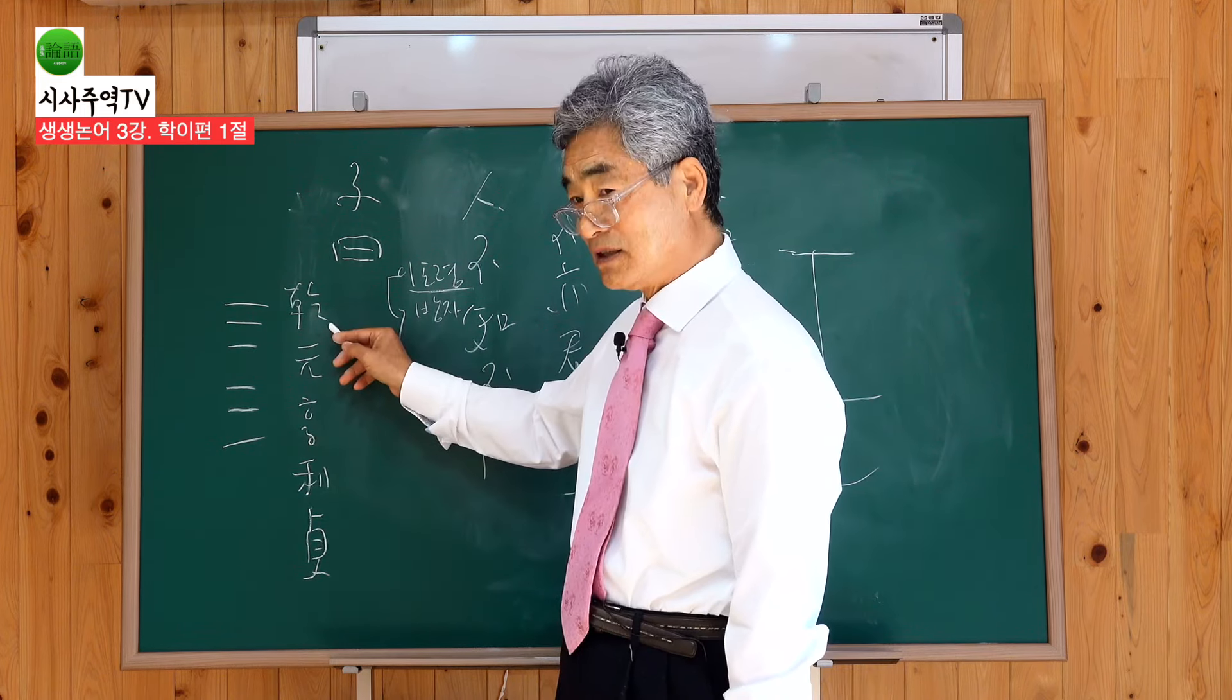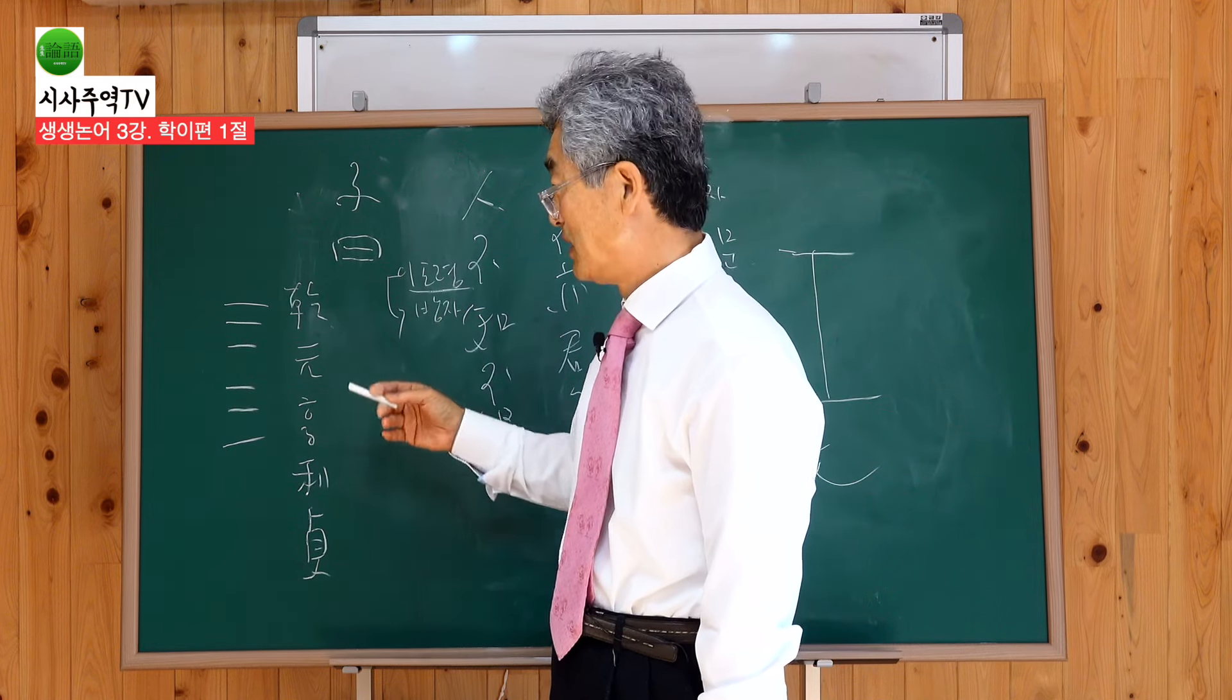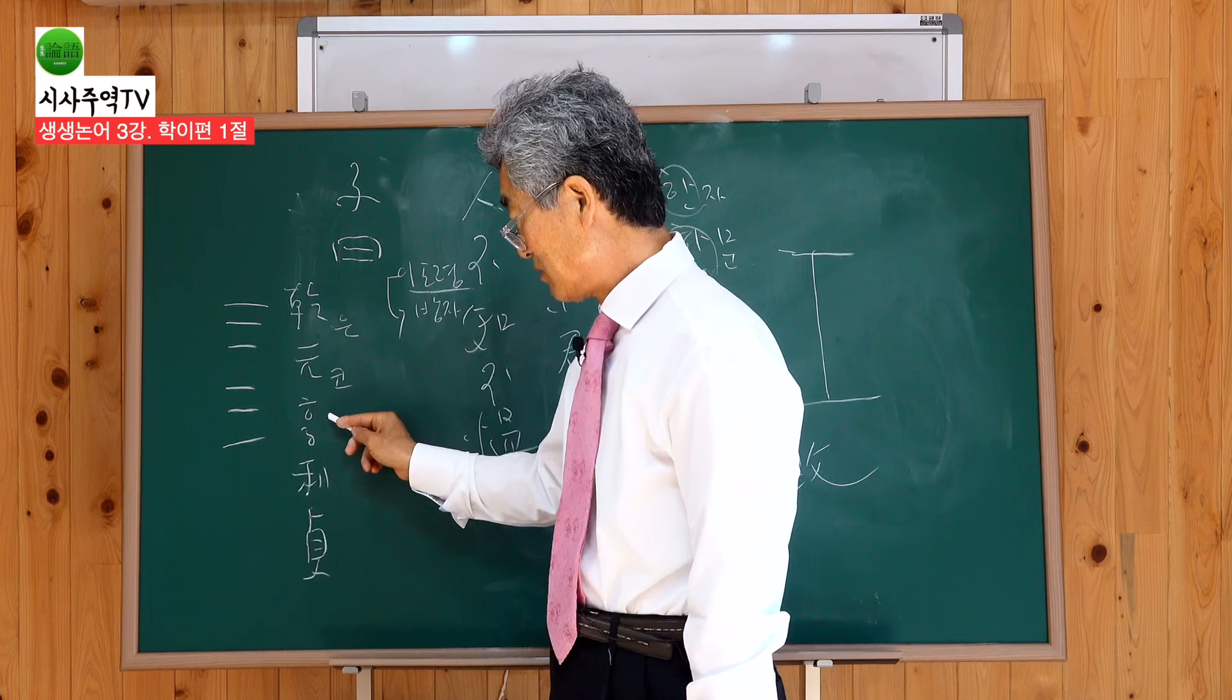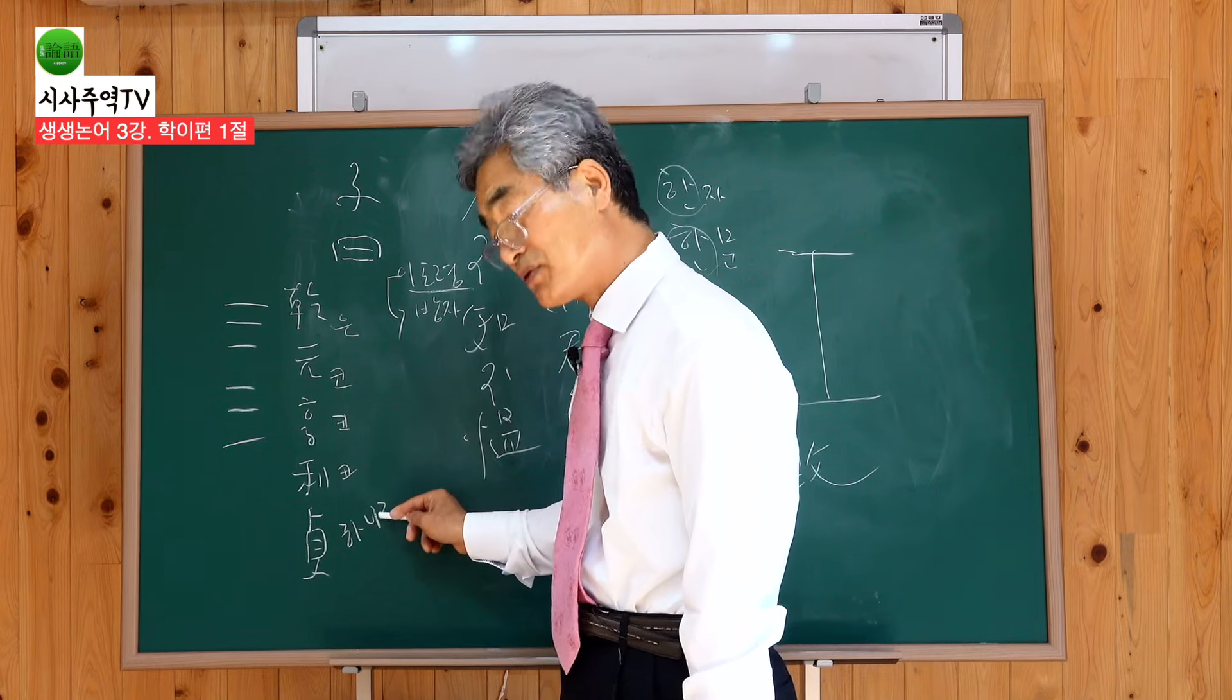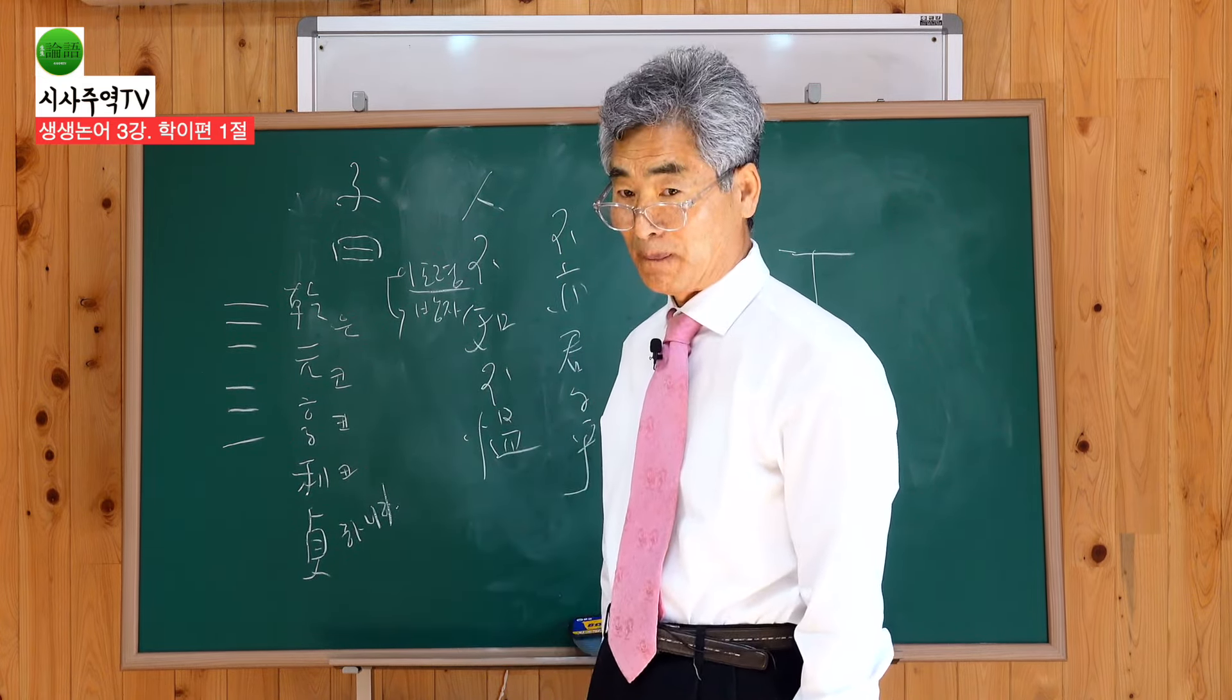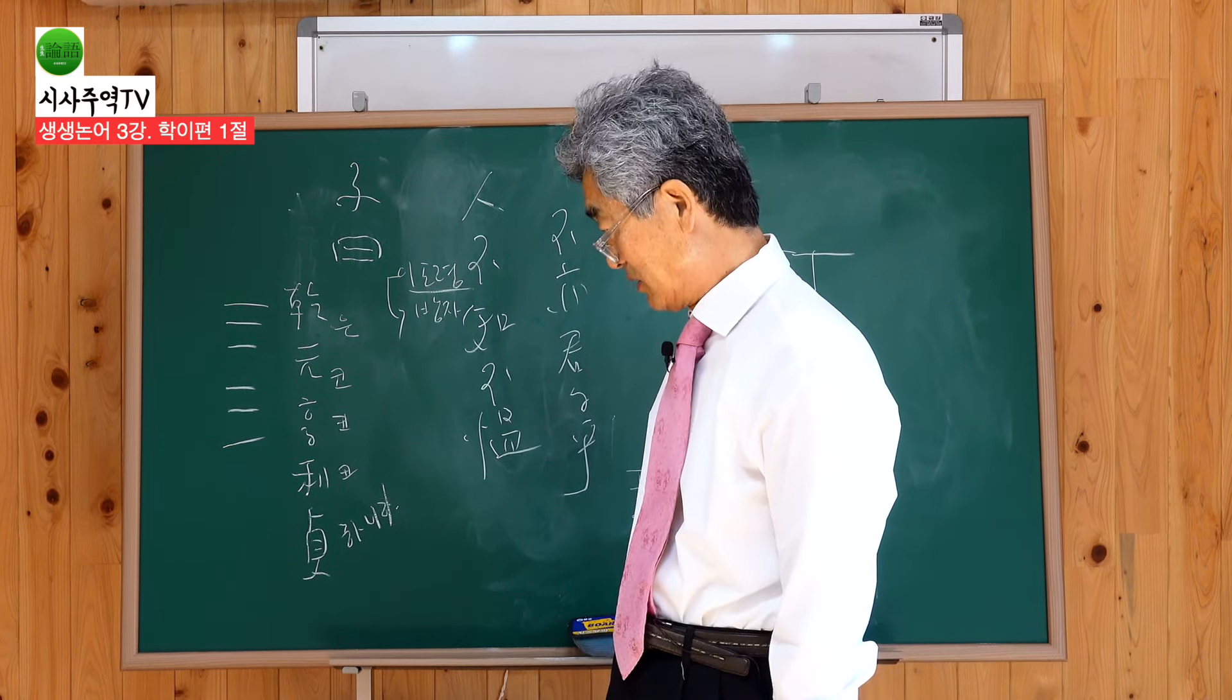그는 이제 현토를 붙입니다. 우리식으로 떼서 잃는다는 말입니다. 그는 원코, 형코, 이코, 정한이라 이랍니다. 읽을 때 이렇게 토를 붙입니다. 건 원형이정이 아니고 우리 소리를 내서 붙이면 그는 원코, 형코, 이코, 정한이라.